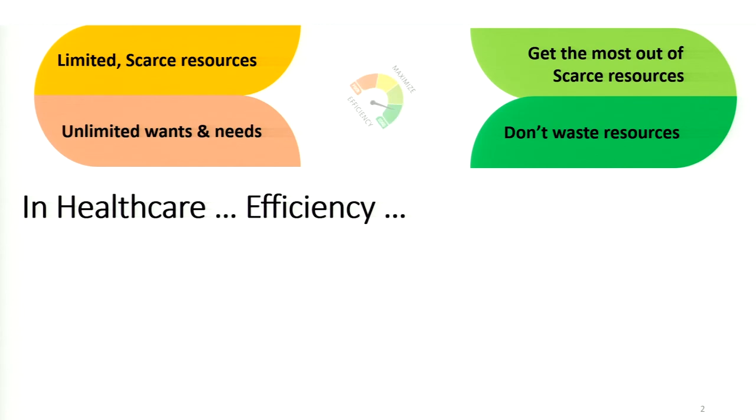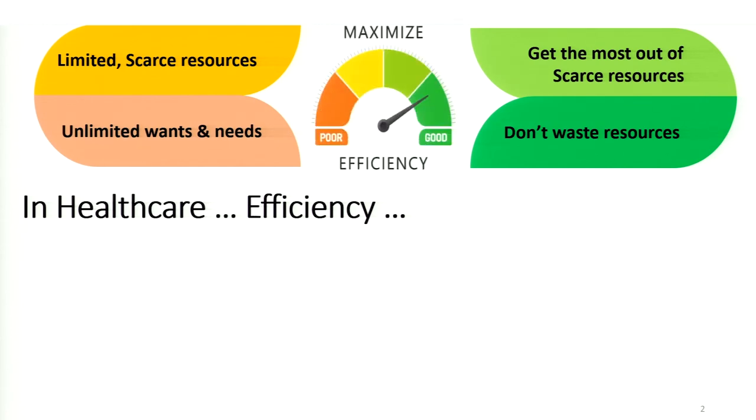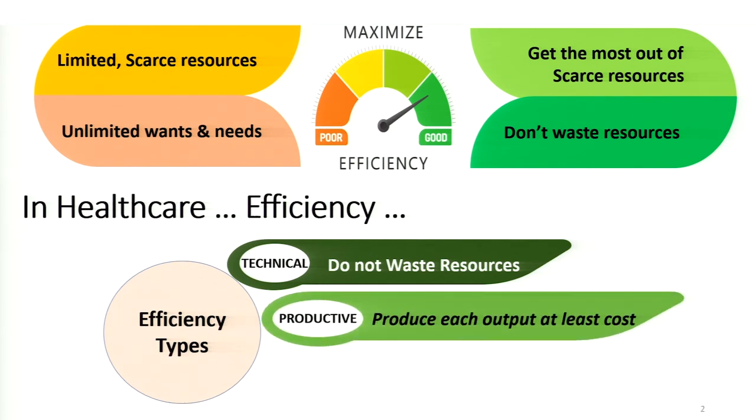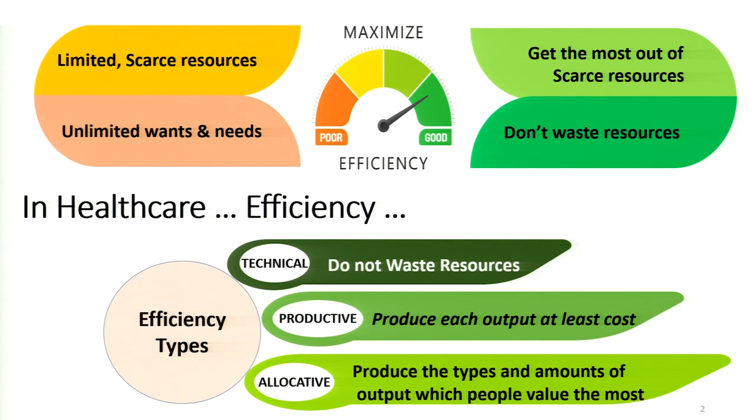How do you achieve efficiency? One key thing is: whatever resources you have, don't waste them — that itself maximizes efficiency. There are mainly three types of efficiency: technical, productive, and allocative efficiency. Technical efficiency means do not waste resources; produce outputs using the least possible amount of resources. Productive efficiency means producing each output at the least possible cost — for example, whether one doctor in a PHC is sufficient or whether a single MRI is enough for an institute.